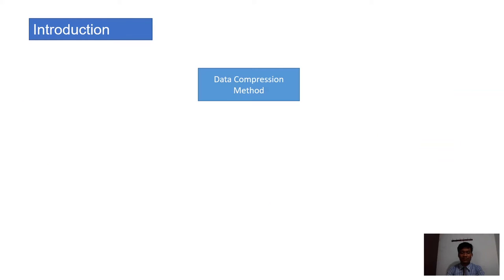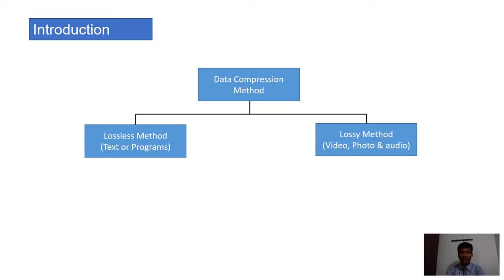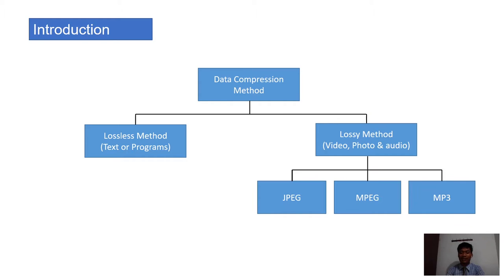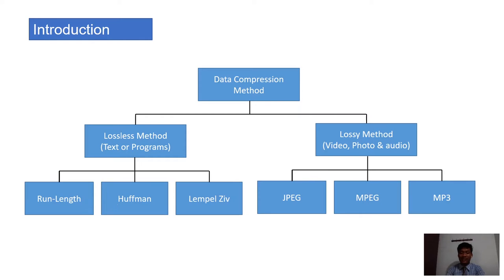First, introduction. Data compression method can be divided into two methods: the lossless method and the lossy method. Lossless methods are for text or programs, and lossy methods are for video, photo, and audio. The lossy method can be divided into three methods: JPEG, MPEG, and MP3.